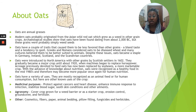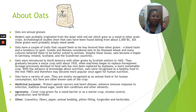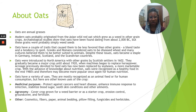Agronomy — oats serve as a cover crop for a weed barrier or a starter crop. They help with erosion control, ground cover, and fertilizer. Some other uses include cosmetics, fibrous paper, animal bedding, pillow filling, fungicides, and herbicides.